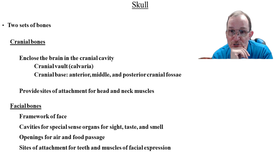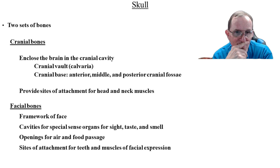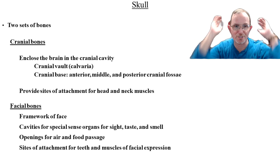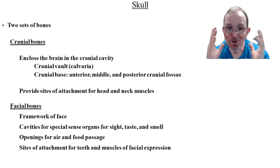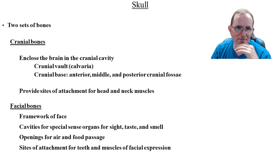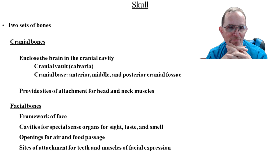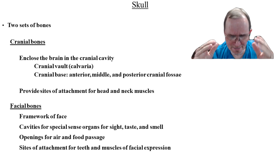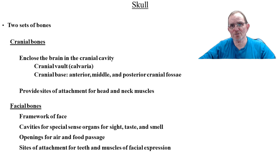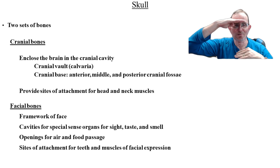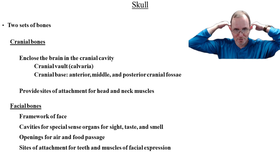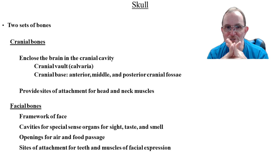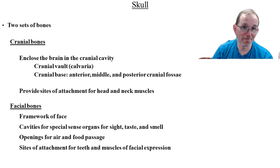Let's focus on the skull right now. There are two sets of bones that make up our skull. We've got the cranial bones, which form the dome of the skull, and then we have the facial bones underneath our face. The cranial vault right up here is called the calvaria. If you look down into the skull, you'll see that there are shelves — interior, middle, and posterior cranial fossa.